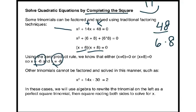Other trinomials cannot be factored and solved in this manner, such as x squared plus 14x minus 30 equals 2. In these cases, we will use algebra to rewrite the trinomial on the left as a perfect square trinomial, then square root both sides to solve for x.